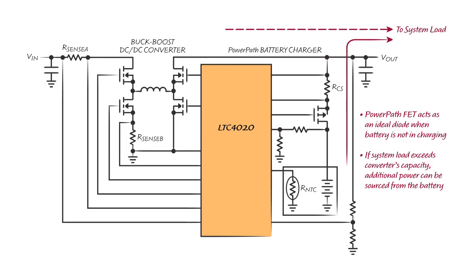If the system load current exceeds the buck-boost converter's maximum capability, additional power can be efficiently provided from the battery through this ideal diode.